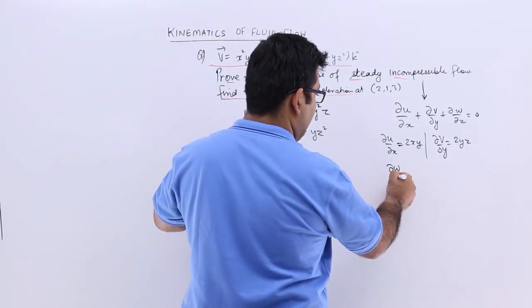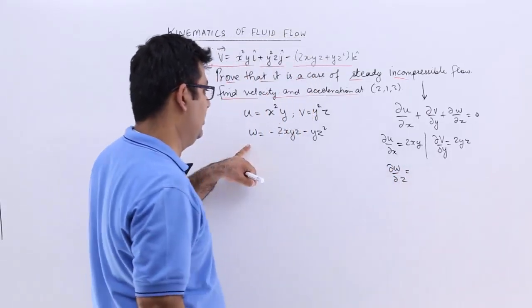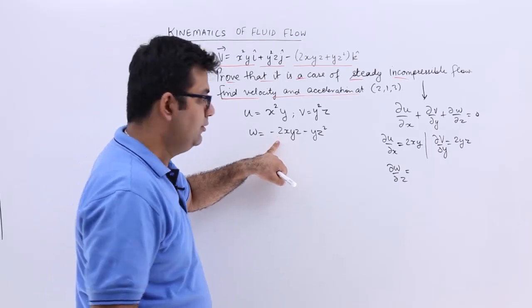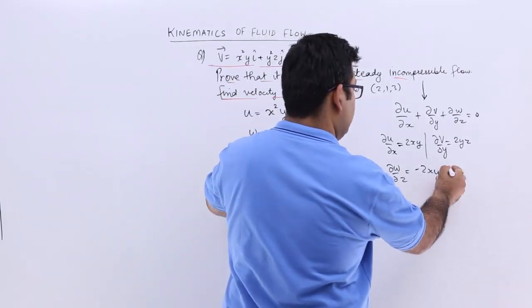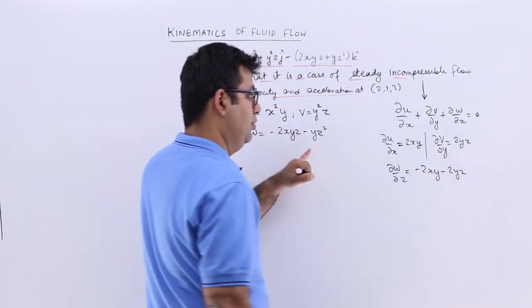Then ∂w/∂z would be minus 2xy minus 2yz.